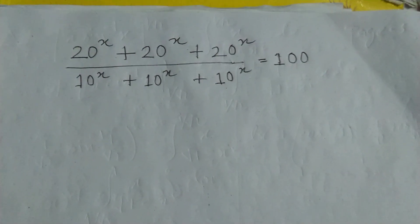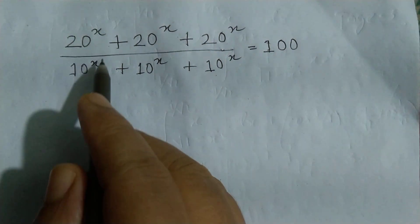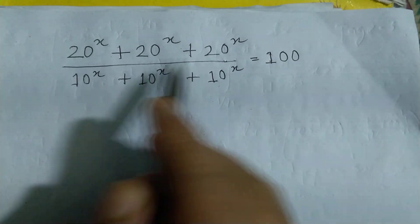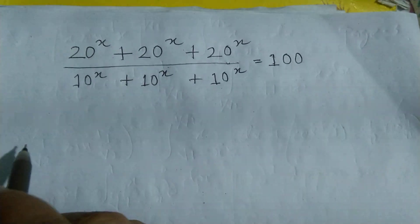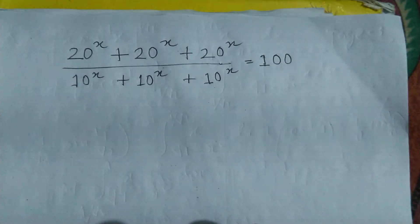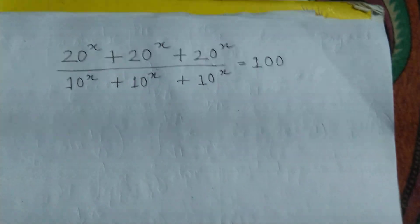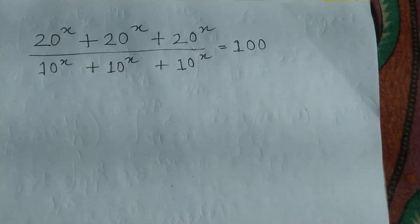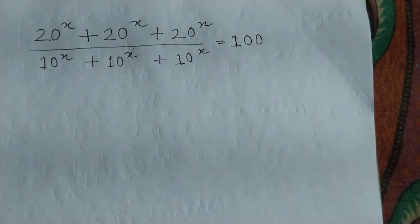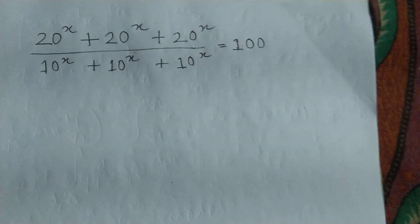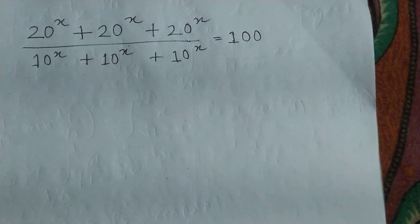Hello dear friends, welcome to my channel. Today's discussion is the equation (20^x + 20^x + 20^x) / (10^x + 10^x + 10^x) = 100. The problem is from the USA Olympiad. How can we solve this problem? This problem is very easy, we can solve it very easily.